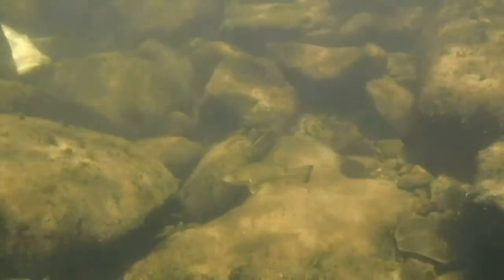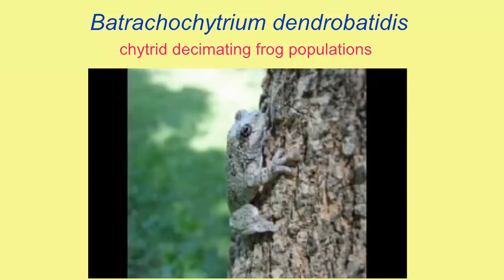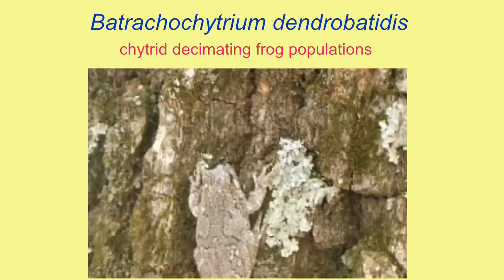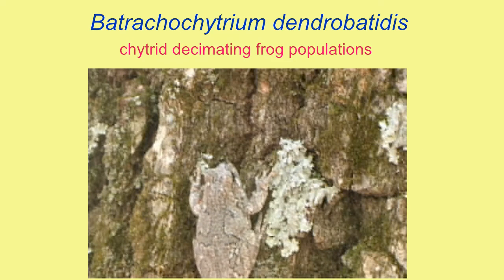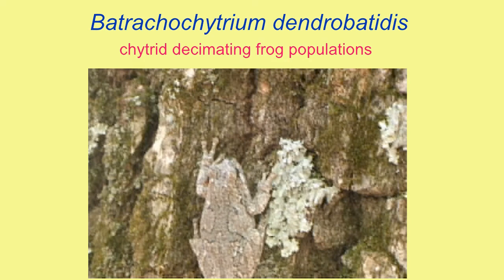Chytrids include the species Batrachochytrium dendrobatidis, or BD, which is decimating many frog populations. Human changes in the environment and the aquarium trade, which may have helped spread this chytrid, have resulted in dramatic losses in many populations.